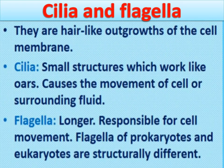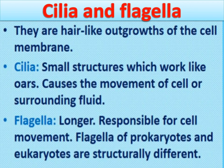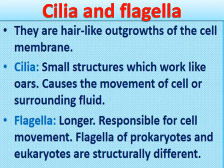Cilia and flagella are a type of cytoskeleton structure. These are hair-like outgrowths of the cell membrane. They help in the movement of the cell and also in the passage of substances that come in contact with them. Cilia are more in number while flagella are usually fewer. Cilia are small structures that work like oars — they beat in a coordinated manner and cause the movement of the cell or surrounding fluid.